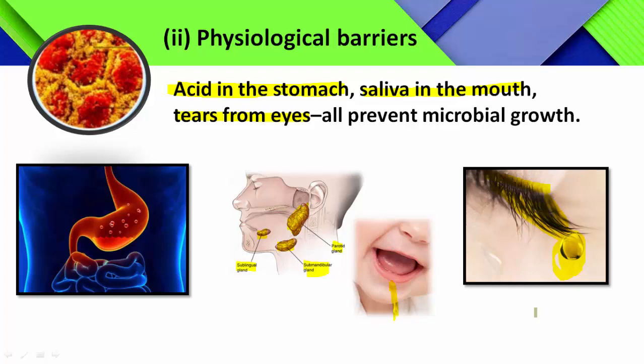Acid in the stomach, saliva in the mouth, and tears from the eyes — these three are representing physiological barriers. Their function is to prevent microbial growth; the intention of every barrier is to destroy or to prevent the microorganism which is able to cause disease.